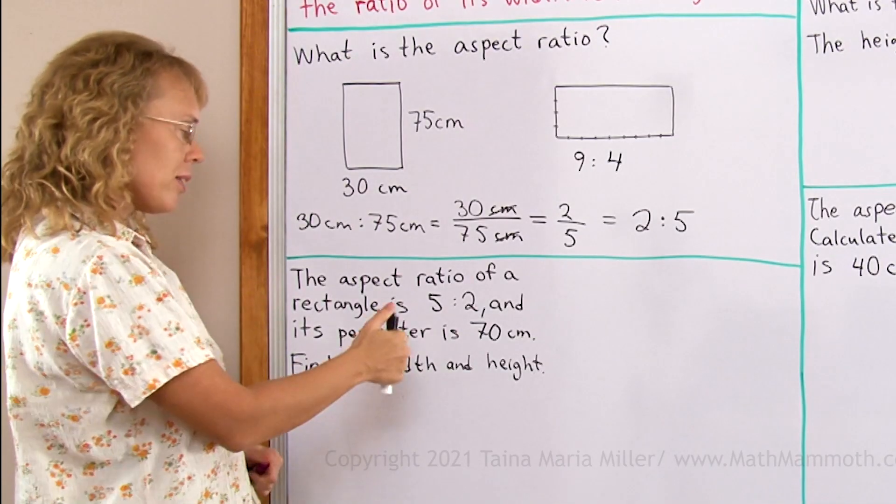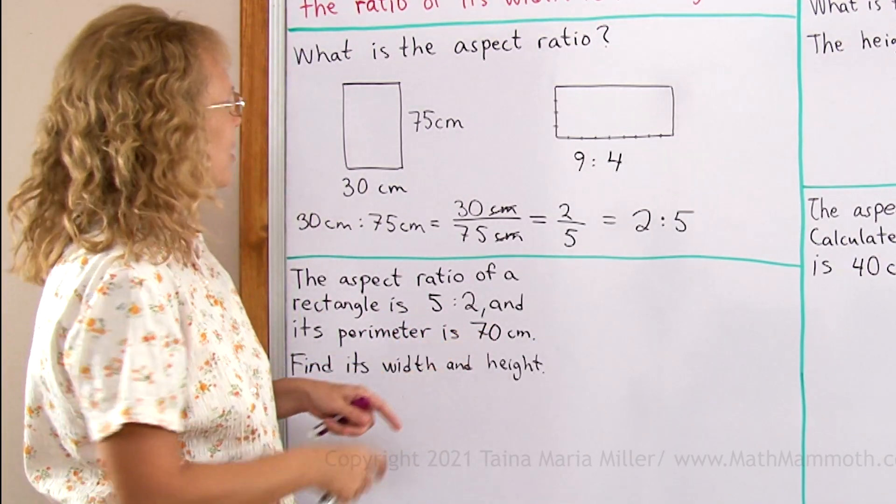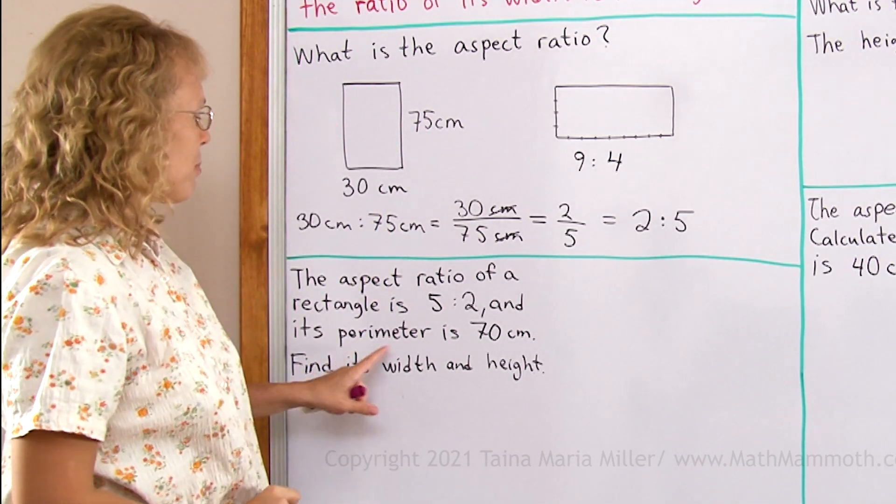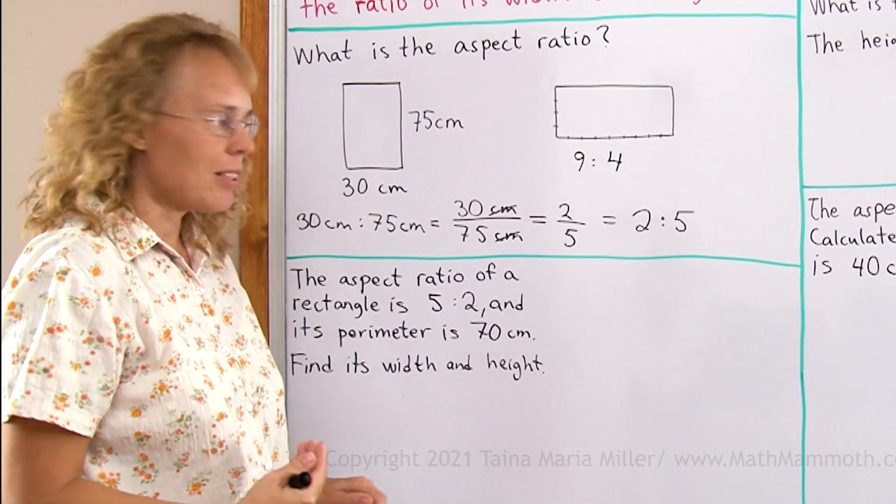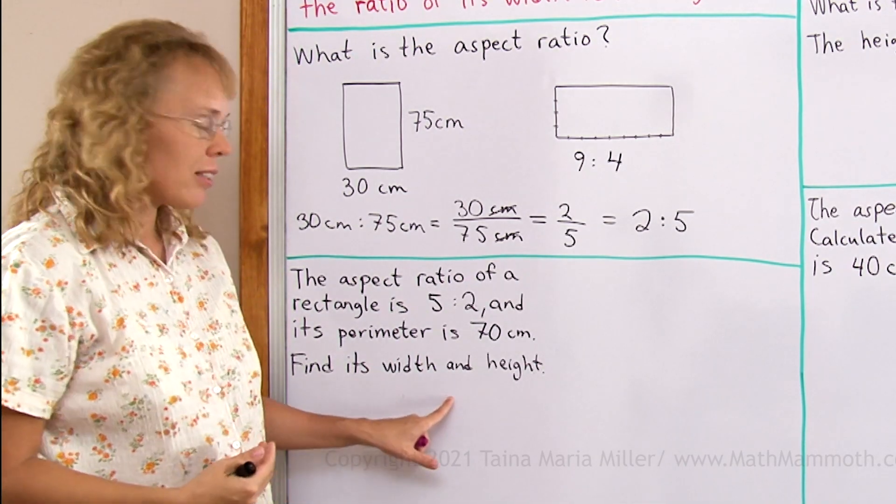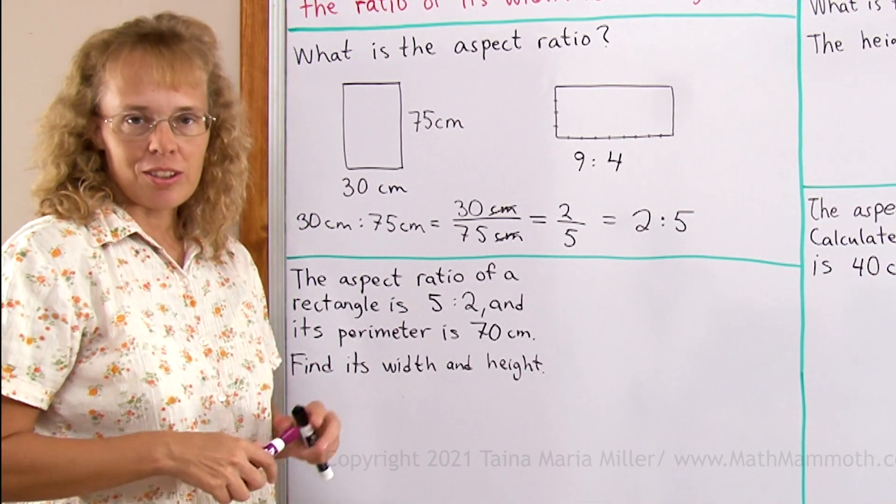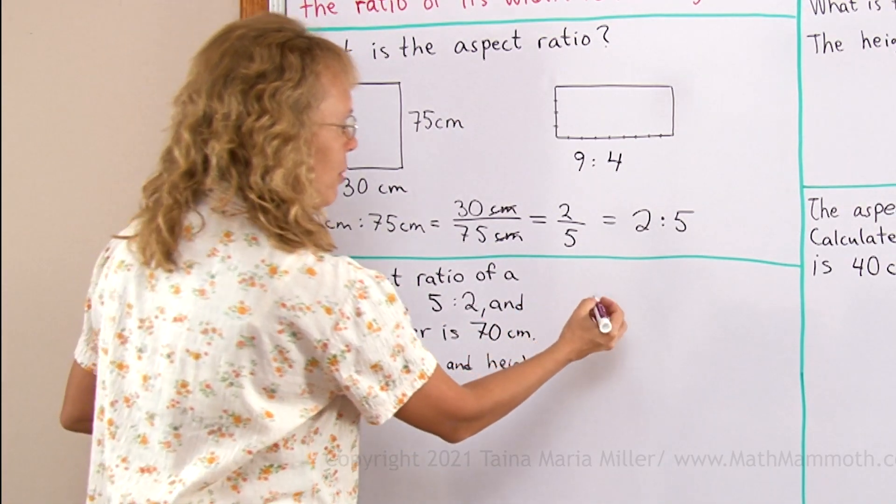Here the aspect ratio of a rectangle is 5 to 2, just the opposite way from here it's turned. And its perimeter is this much, 70 centimeters. And find its width and height, find the two dimensions. It always helps to draw or sketch a little rectangle here, so let me do that.